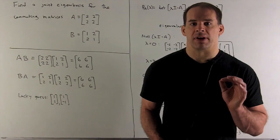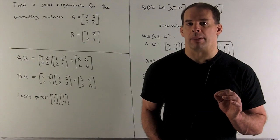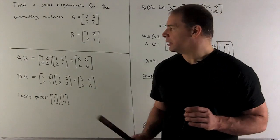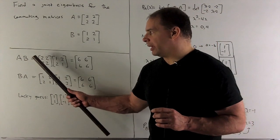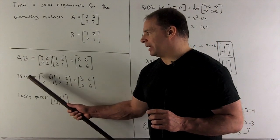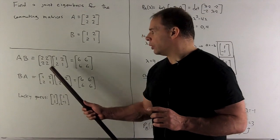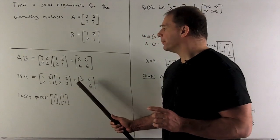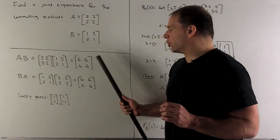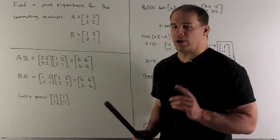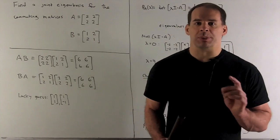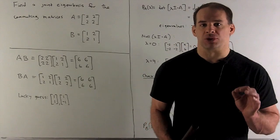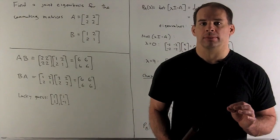Now let's verify the commuting property. We take AB, we take BA, multiply each out, and what comes out agrees. So we have AB equals BA, and the matrices commute.